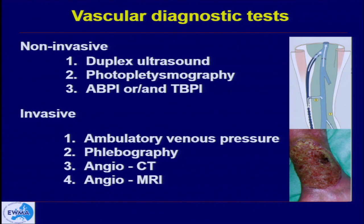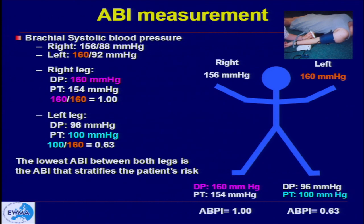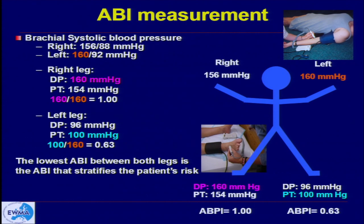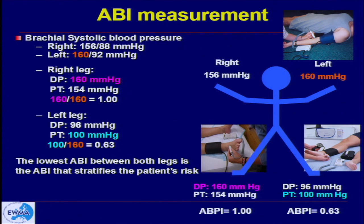We have to remember that when we assess the venous system, we must always assess the ABPI — the ankle brachial pressure index — or, especially if the ulceration is huge, a toe brachial pressure index. We always use Doppler to measure the pressure on the left arm and at the dorsal pedis and posterior tibial arteries. We take the highest value and divide it to get the ABPI. An ABPI of one is normal; an ABPI of 0.63 on the left means the patient with venous leg ulcer on the left side, having ABPI lower than 0.6, cannot have the same compression therapy as on the healthy leg. The diagnosis would be moderate PAD — peripheral arterial disease — in the left leg.